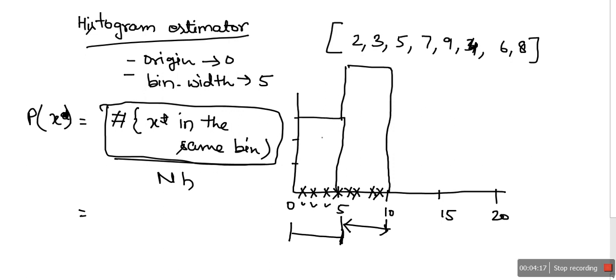For example, let me consider x as 4. I want to find out the probability of 4. Where is 4? 4 is here, so this is the bin you need to consider. How many data points are there? There are 1, 2, 3 - three data points are there, so here you will write 3. n is the total number of data points: 1, 2, 3, 4, 5, 6, 7, 8. And h, what is h? h is bin width. So this will be the probability: 3/(8*5).